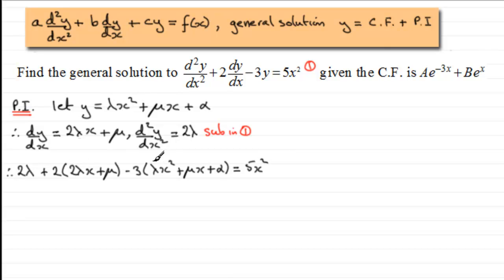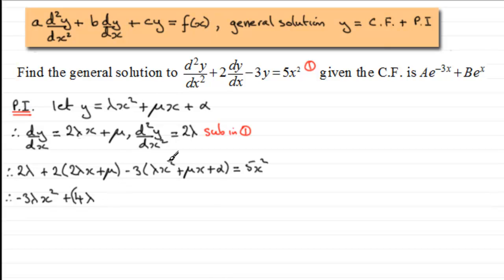Now let's expand and group by type of term. For the x² terms, we have −3λx² — that's the only x² term. For the x terms, we have 4λx from the expansion, and then −3μx from the −3y term.